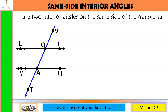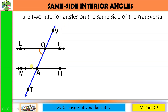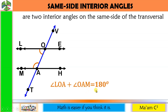Same-side interior angles are two interior angles on the same side of the transversal. We're going to get a pair of angles in between the parallel lines. Let's start with the left side and have this angle. Since same side, we get another angle on the left side. So angle LOA and angle OAM are same-side interior angles. When you add angle LOA and angle OAM, their measurements equal 180 degrees.